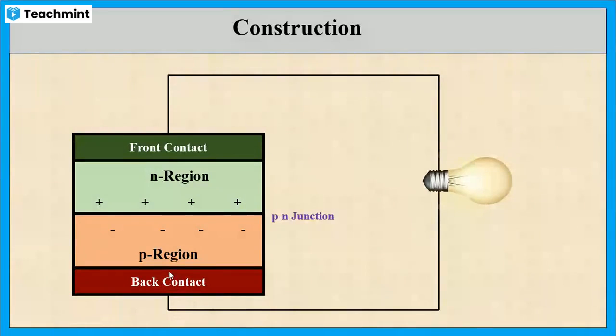When sunlight falls through the front contact of the solar cell to the n-region, it will knock the electrons from the n-region. These electrons move from the n-region to the p-region through the external circuit and produce electrical energy.